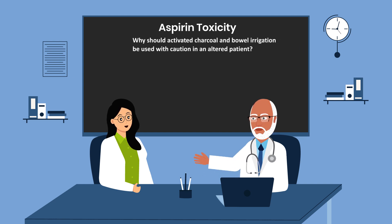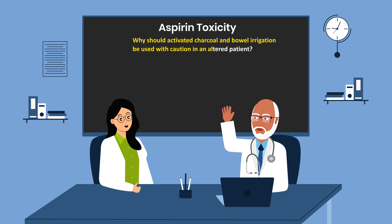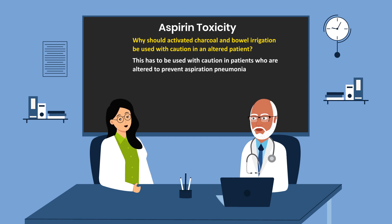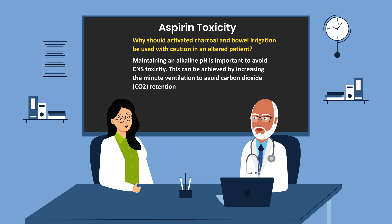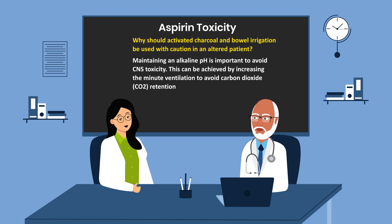Why should activated charcoal and bowel irrigation be used with caution in an altered patient? This has to be used with caution in patients who are altered to prevent aspiration pneumonia. Maintaining an alkaline pH is important to avoid central nervous system toxicity. This can be achieved by increasing the minute ventilation to avoid carbon dioxide retention.